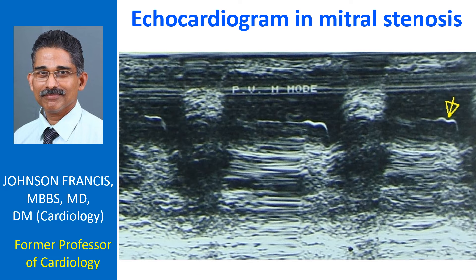Pulmonary hypertension was evidenced by the flat EF slope of the pulmonary valve M-mode echocardiogram and a shallow A wave. A mid-systolic notch may also appear in severe pulmonary hypertension.